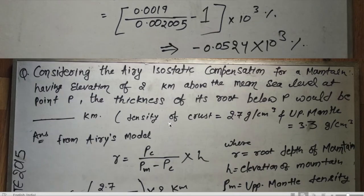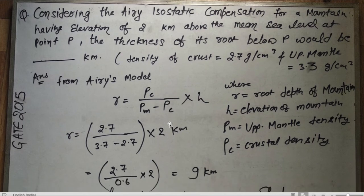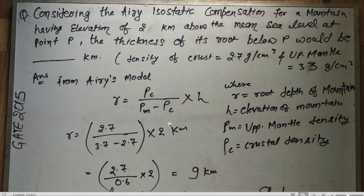Next question: considering the Airy isostatic compensation for a mountain with an elevation of 2 km above mean sea level at point P, the thickness of its root below P would be how many kilometers? Using the Airy isostatic compensation method, we are given crustal density 2.7 g/cm³ and upper mantle density 3.3 g/cm³.